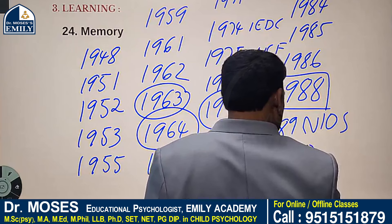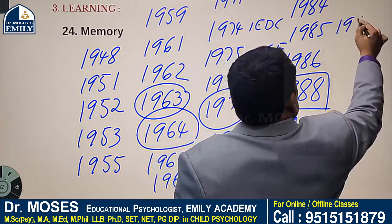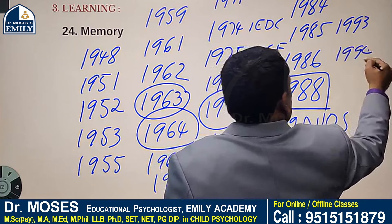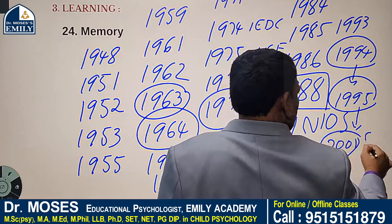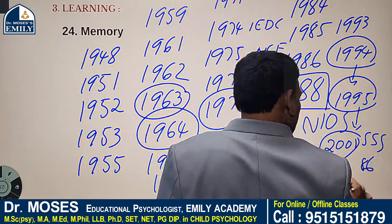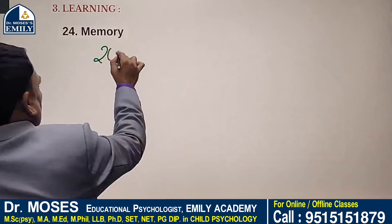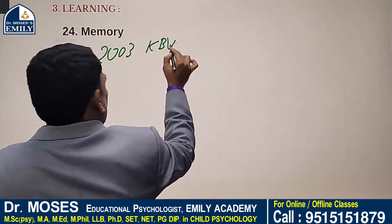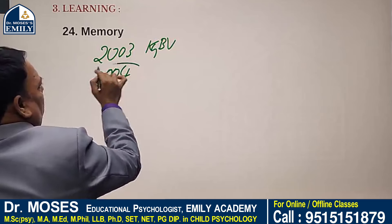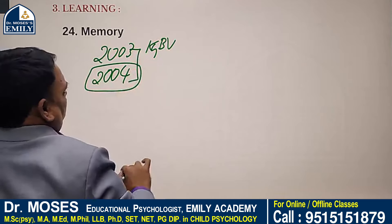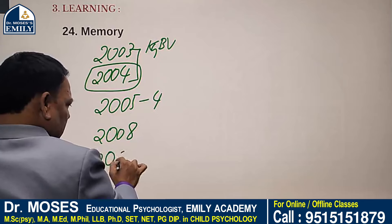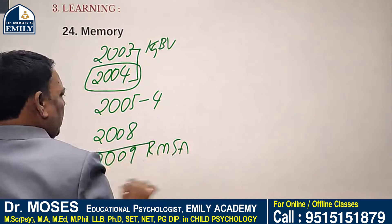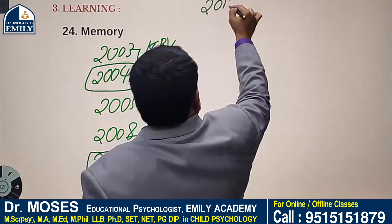1990: Acharya Ramamurti Committee. 1992: Yashpal Committee. 1993: Establishment of NCTE. 1994: National Assessment and Accreditation Council. 1995: P. Ramakrishna Rao Committee Report. 2001: Sarva Shiksha Abhiyan. 2002: 86th Constitutional Amendment. 2003: National Programme for Elementary Education of Girls. 2003–2004: Kasturba Gandhi Balika Vidyalaya (KGBV). 2005: 4th National Curriculum Framework. 2008: Model Schools. 2009: Rashtriya Madhyamik Shiksha Abhiyan and Saakshar Bharat Programme. 2010: Code of Ethics for Teachers.